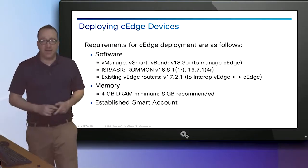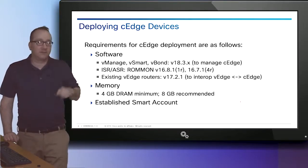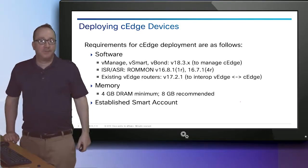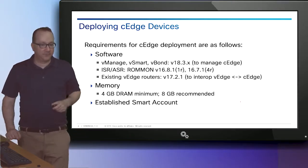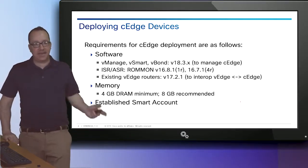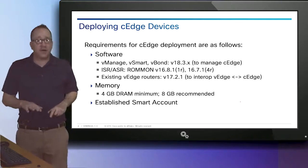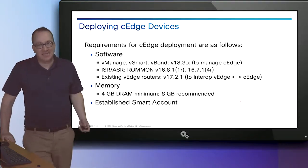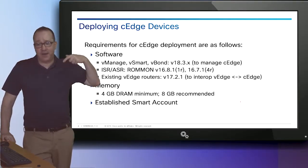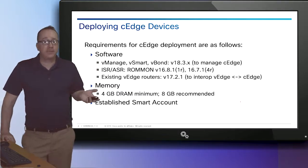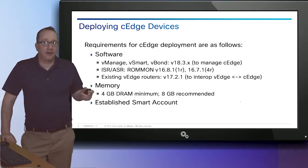Requirements for a CEdge — which means this is the SD-WAN software running on a Cisco router — you have to have an ISR or an ASR running a newer version of IOS. If you want to interoperate with existing VEdge, you need at least version 7.2.1. VManage has to be at least the same or higher version than any VEdge or CEdge software. So if you plan to deploy the system, upgrade your VManages before you upgrade your VEdge devices. We'll talk about that in our OAM section later.